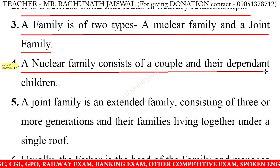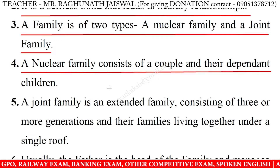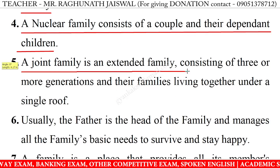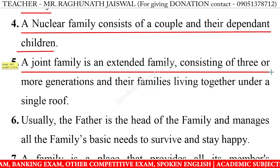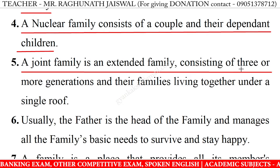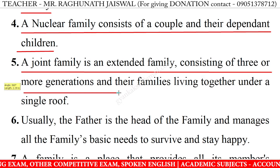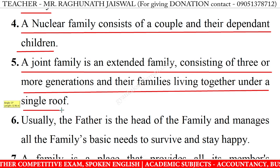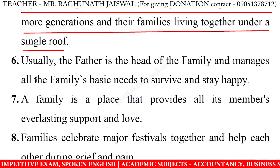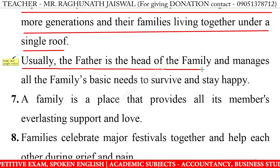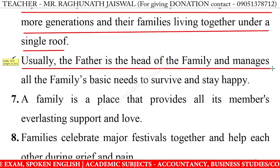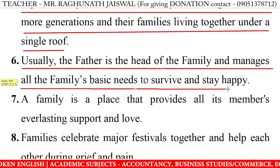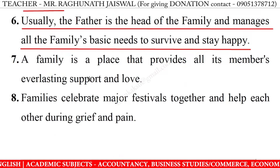4. A nuclear family consists of a couple and their dependent children. 5. A joint family is an extended family consisting of three or more generations and their families living together under a single roof. 6. Usually the father is the head of the family and manages all the family's basic needs to survive and stay happy.